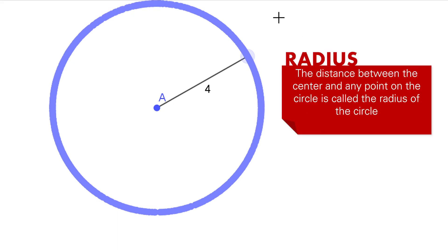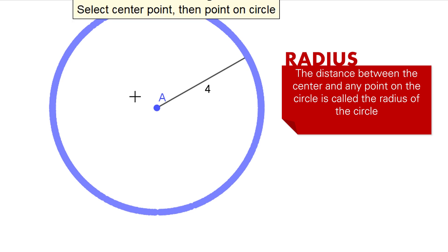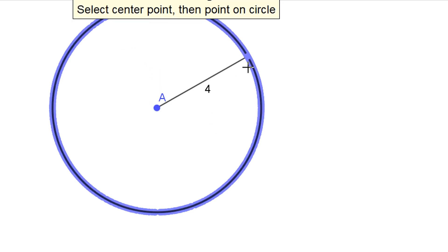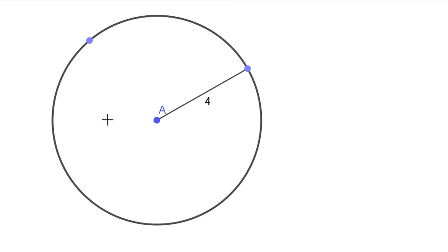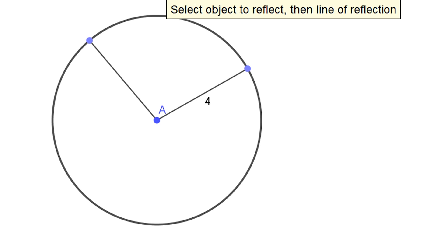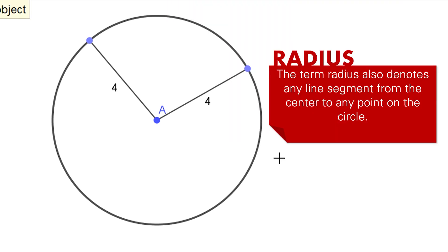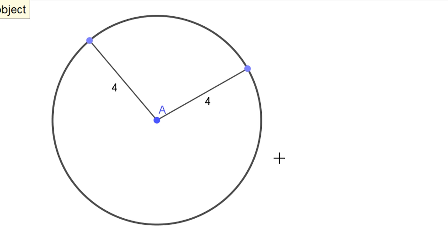The distance between the center and any point on the circle is called the radius of the circle. So in this case, the radius is 4. The term radius also denotes any line segment from the center to any point of the circle — so radius has two meanings: a distance and a line segment.